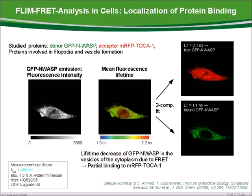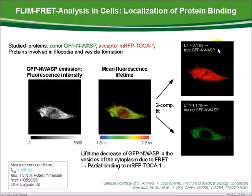In this experiment, the group of Sohail Ahmed was interested in vesicle formation pathways. The protein N-VASP was labeled with TFP, while the red fluorescent protein was expressed near TOCA1. We see in the FLIM image a long lifetime inside the nucleus and a short lifetime around it. If we perform a two-component lifetime analysis, we find two lifetimes: 2.1 nanoseconds, the lifetime of the donor-only, can be found all over the cell. Due to FRET, the lifetime of the bound complex of N-VASP and TOCA1 decreases to 1.1 nanoseconds. The short lifetime component of 1.1 nanoseconds shows only the bound FRET molecules. As we see here, FRET takes place only on vesicles.